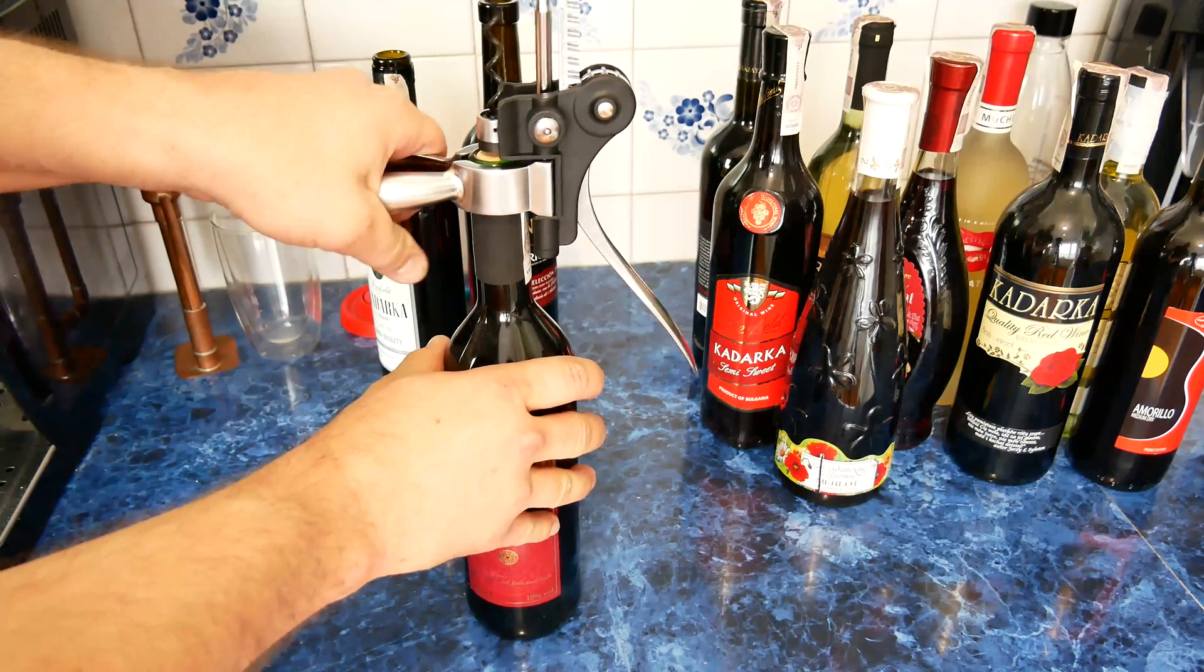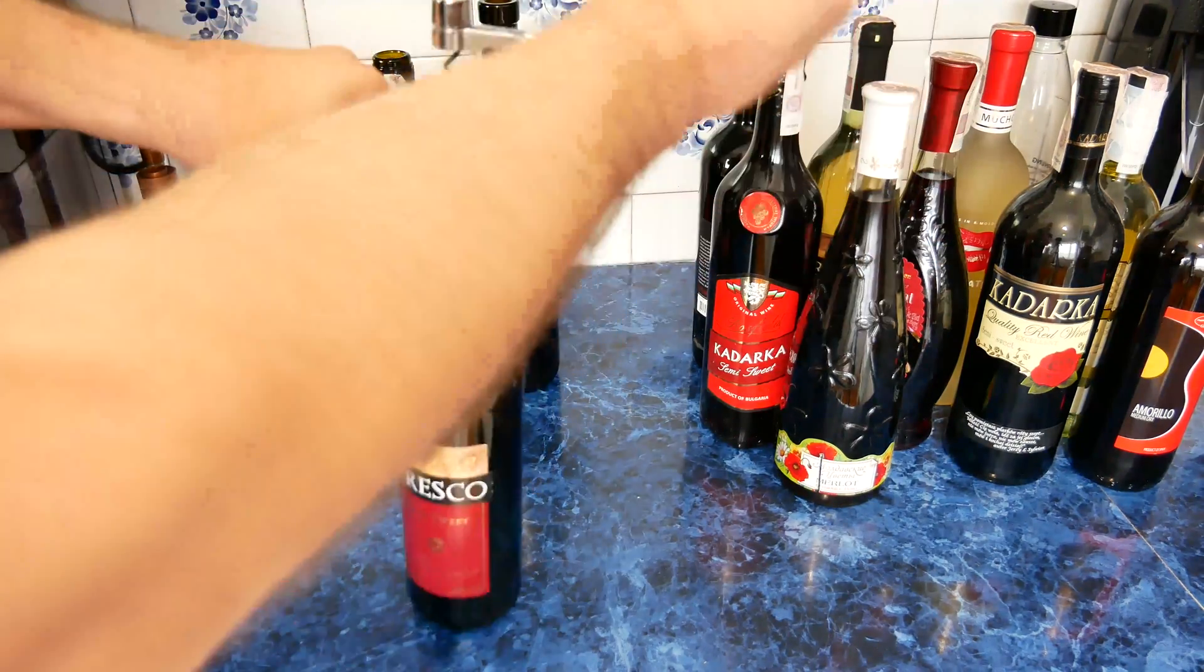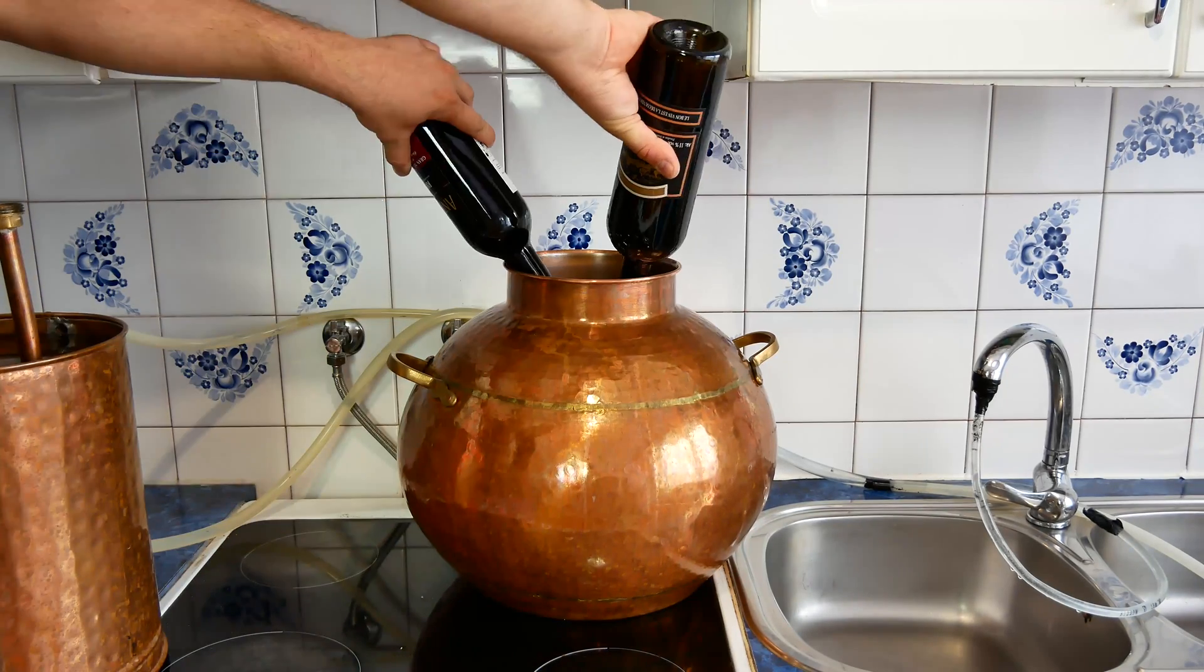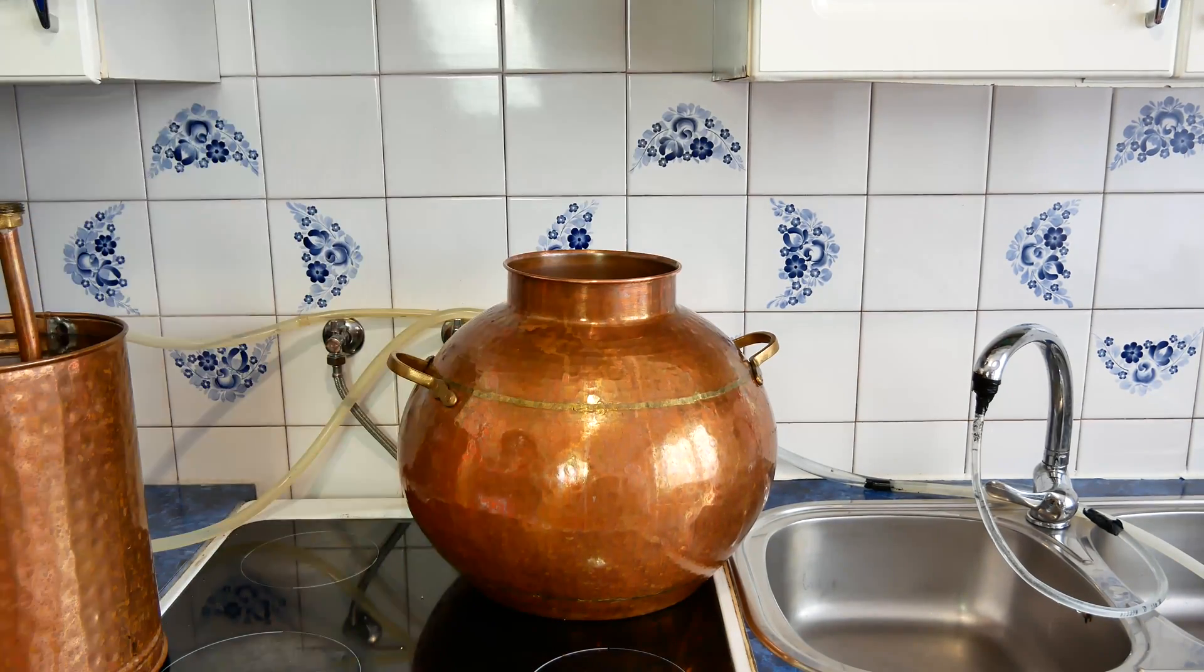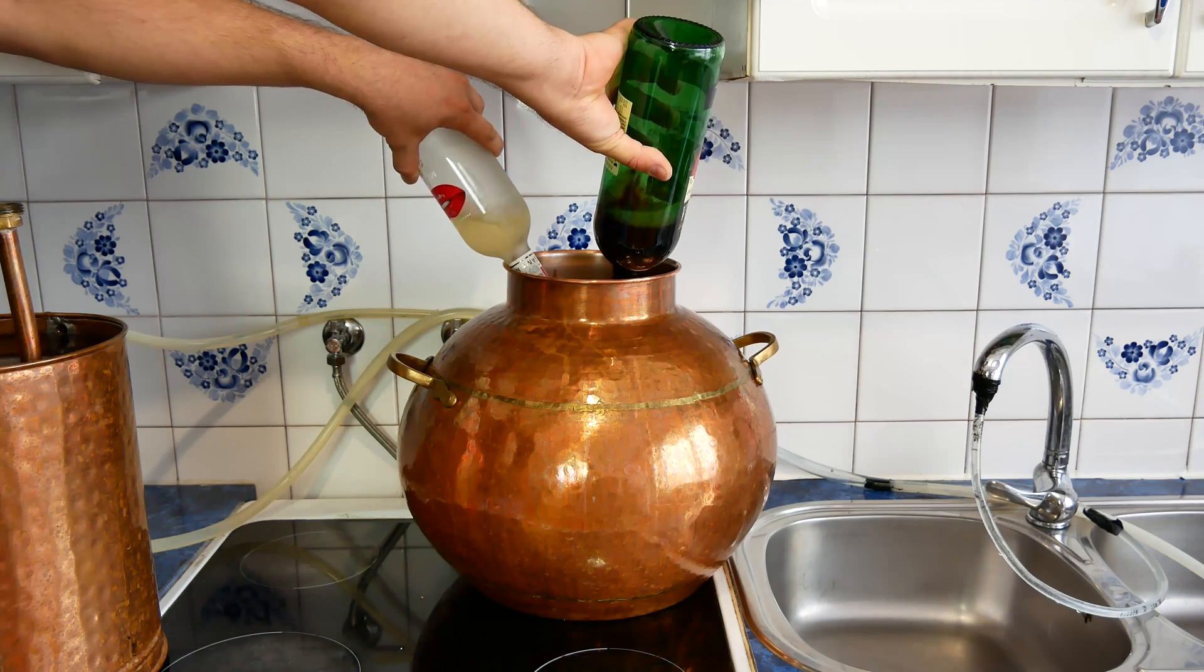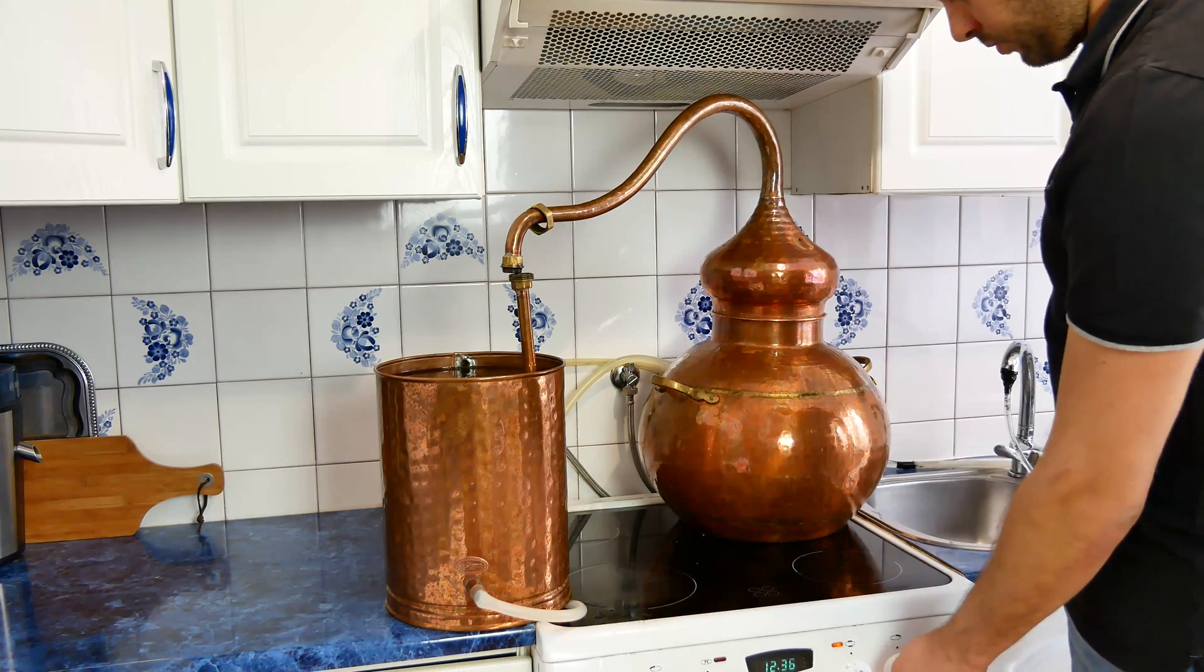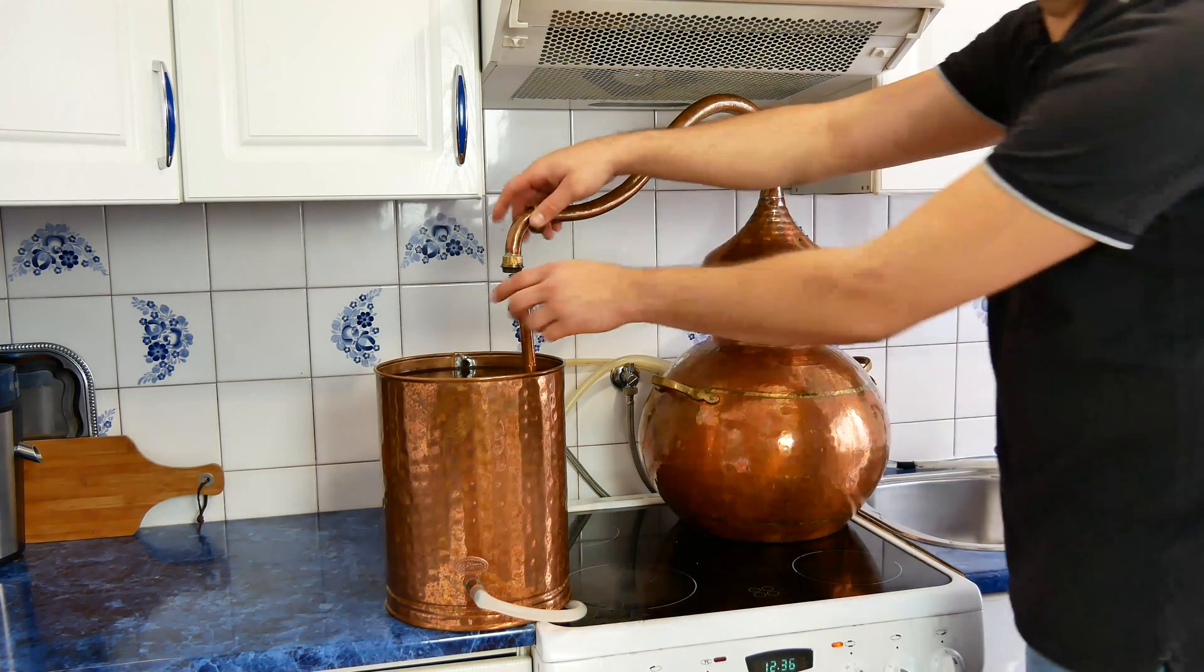We open 12 bottles of wine and pour the contents into the alembic. We turn on the heating and mount all elements of the alembic. Connect the cold water supply to the radiator.